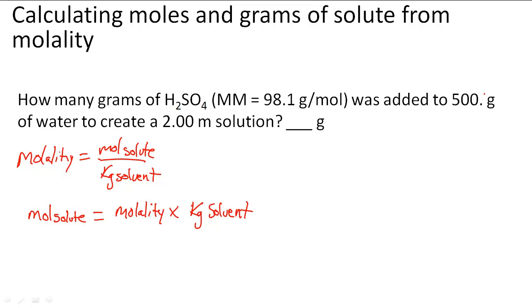We know the grams of the solvent, water, so we know it's 0.500 kg. So when you multiply 2.00 molal times 0.500 kg, I'm going to get 1 mol or 1.00 mols.